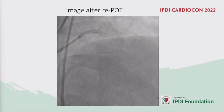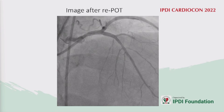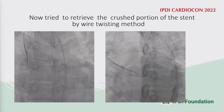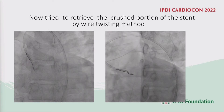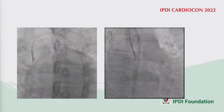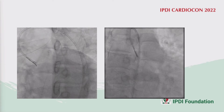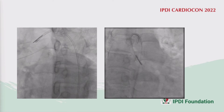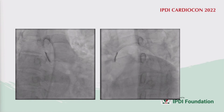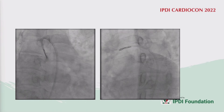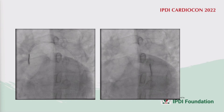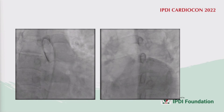This is the final image after re-POBA. We then attempted to retrieve the crushed portion of the stent by the wire twisting method. Using the balloon to assist wire twisting, we tried to catch the stent, and after subsequent attempts the stent began to move — but again it was lost.